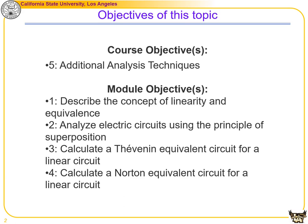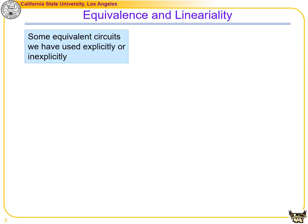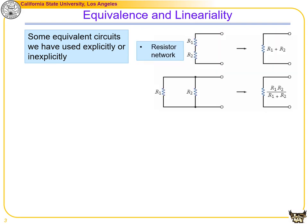Some equivalent circuits we have used explicitly or implicitly. For example, with resistor networks, we know how to combine two resistors R1 and R2 in series, and we also know how to combine two resistors in parallel.